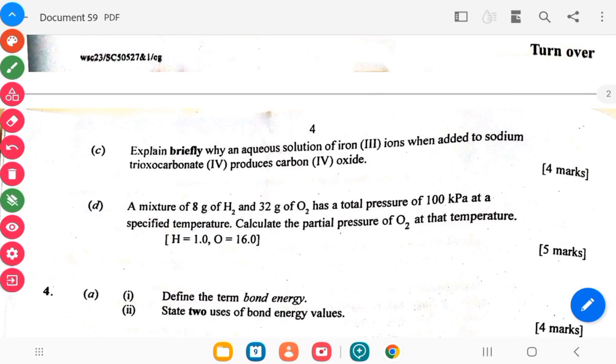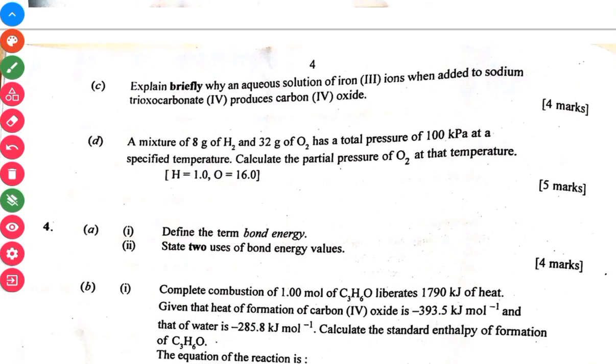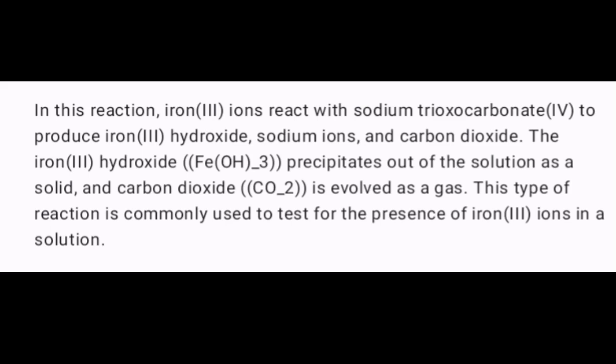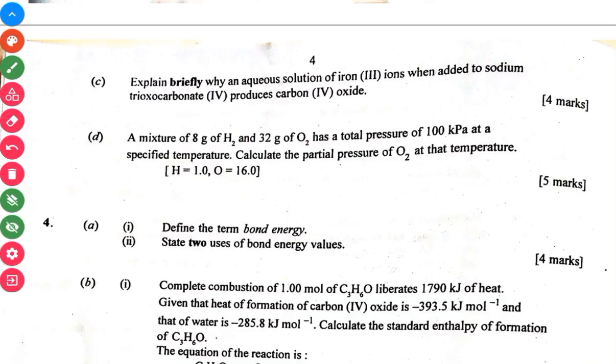Iron III ions when added to sodium trioxocarbonate IV produces carbon IV oxide. Then the D, a mixture of 8 grams of oxygen gas and 2 grams of hydrogen at a total pressure of 100 kPa at a specified temperature. Calculate the partial pressure of oxygen.